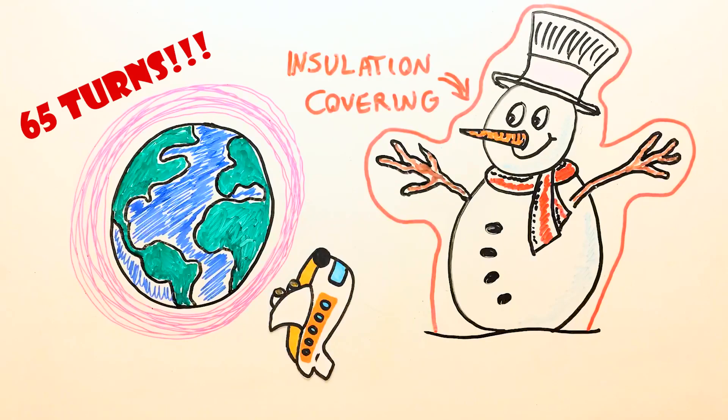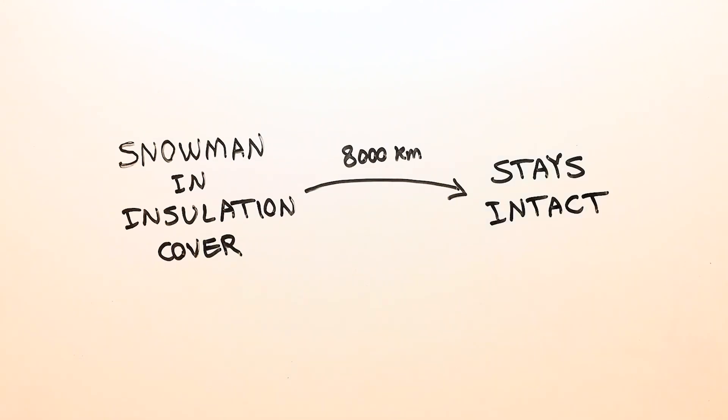So these rough numbers tell me that shipping the snowman covered with the vacuum-insulated panels for 8000 kilometers was quite a safe and doable job as the Japanese manufacturer did in 2011.